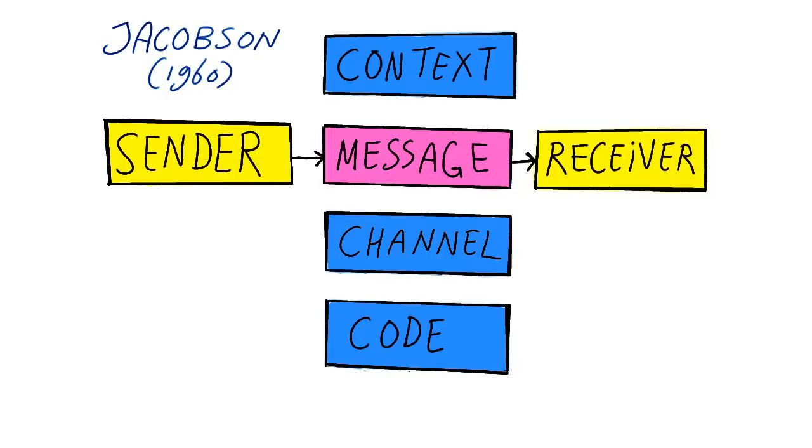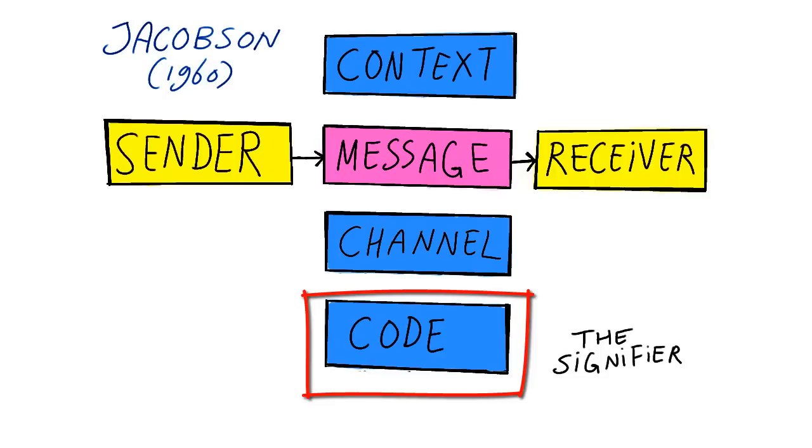Another new element was the explicit mention of the code of a message, which is the form that a message takes, in semiotics the signifier. So in our two examples, the codes are a red light and a letter, consisting of words written in a specific language.